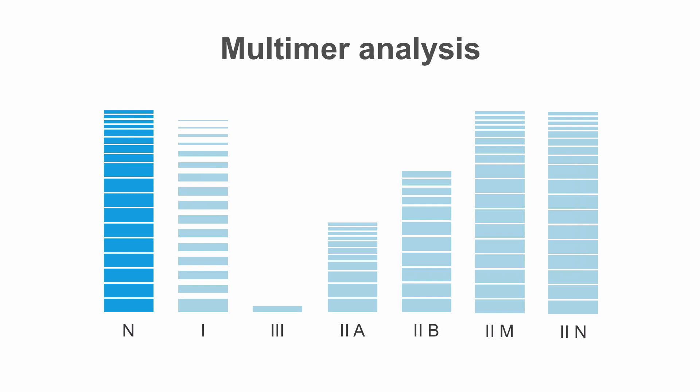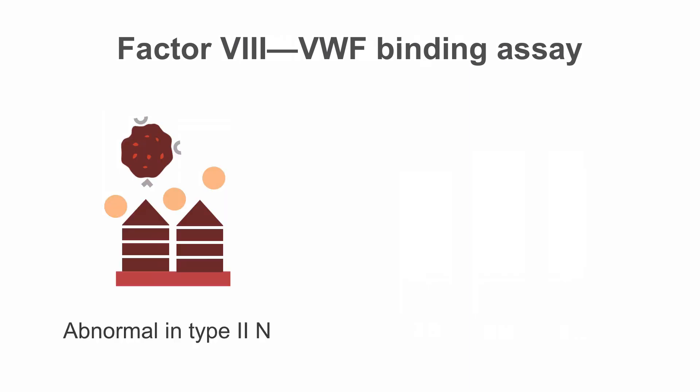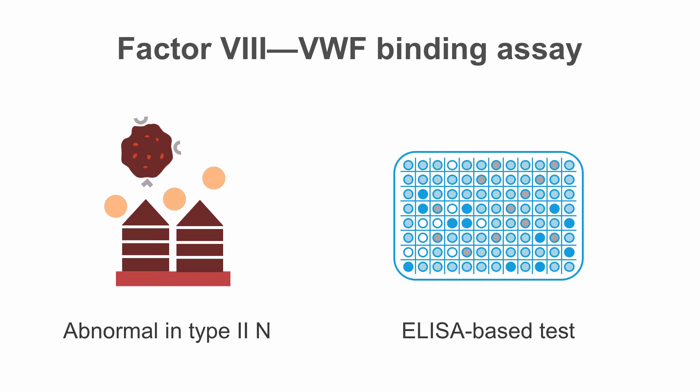How would we go about diagnosing type 2N? There is a factor 8 von Willebrand's factor binding assay for this condition. In type 2N the binding of von Willebrand's factor and factor 8 is abnormal, resulting in easy degradation of factor 8. Low levels of factor 8 in such patients makes us think of hemophilia. The factor 8 von Willebrand's factor binding assay is an ELISA-based test and is usually sent out to a reference laboratory.